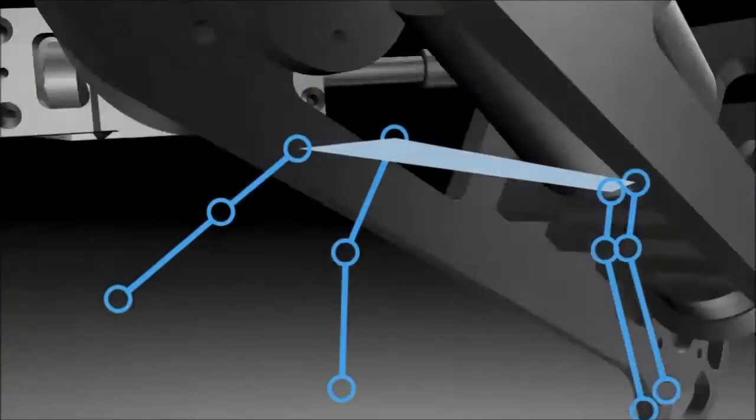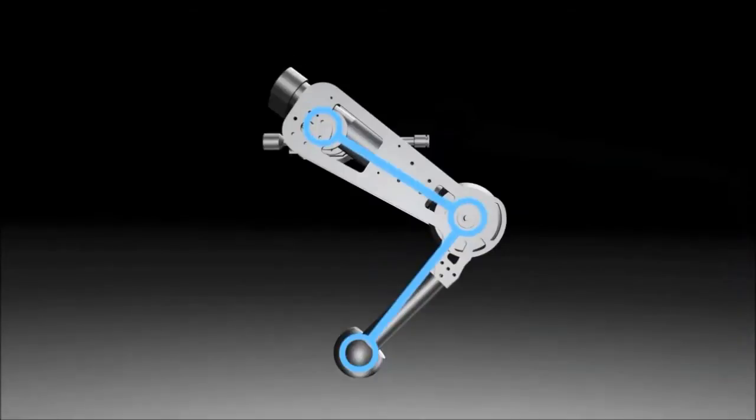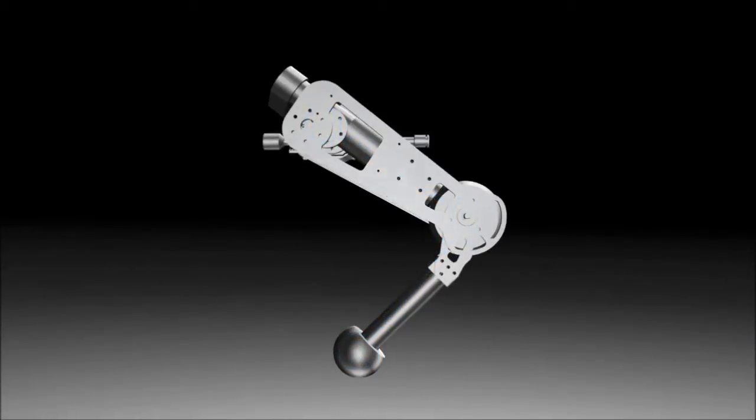This is a leg from the electrically actuated Starleth robot. Each leg has three active degrees of freedom with motors providing hip abduction, hip flexion, and knee flexion.